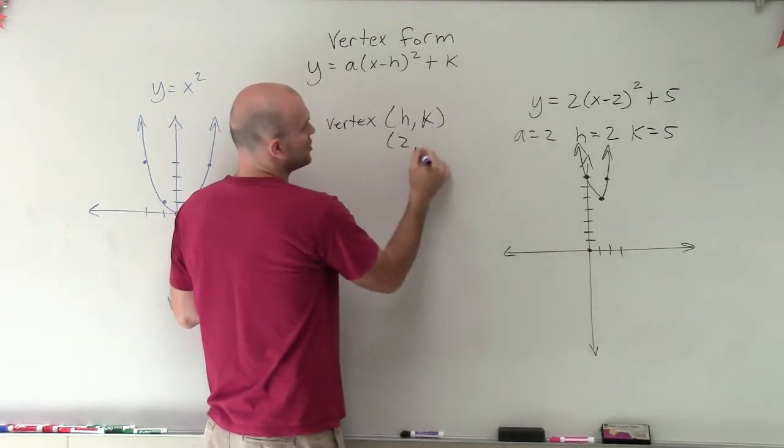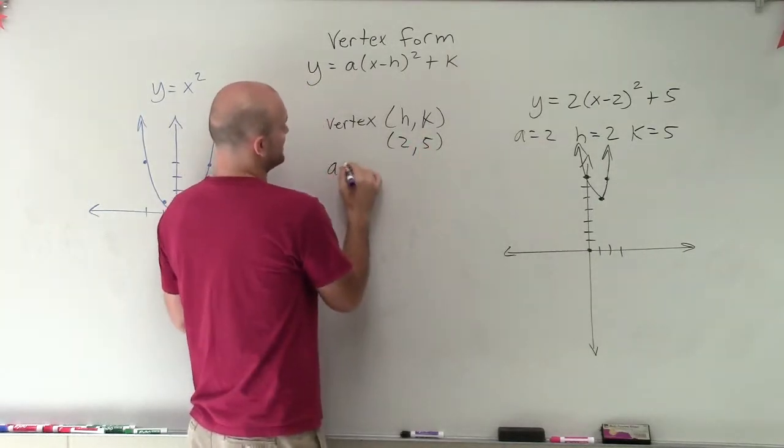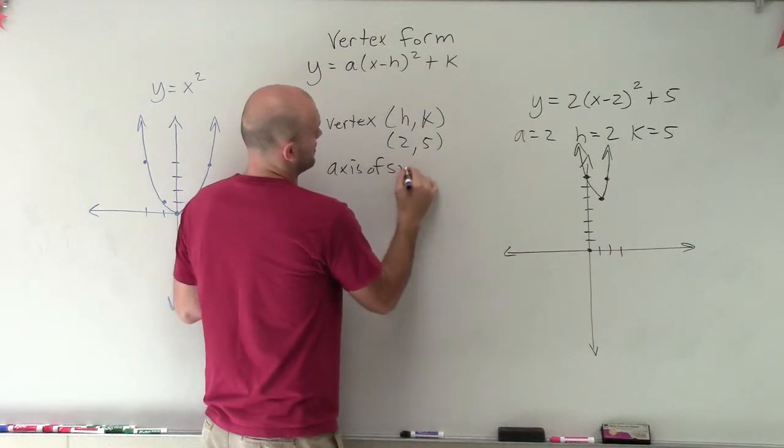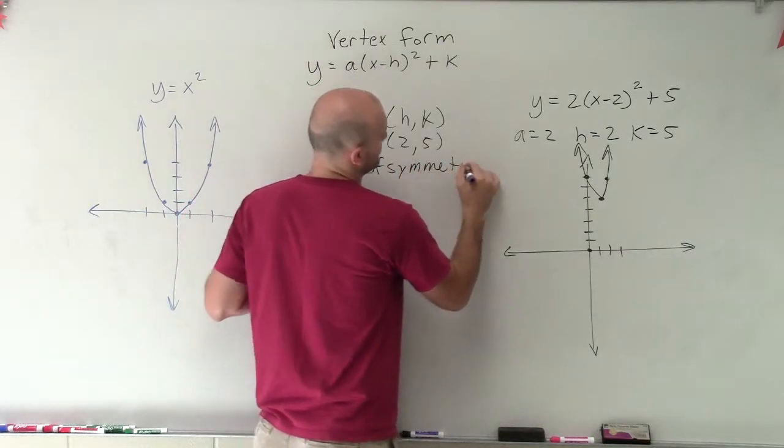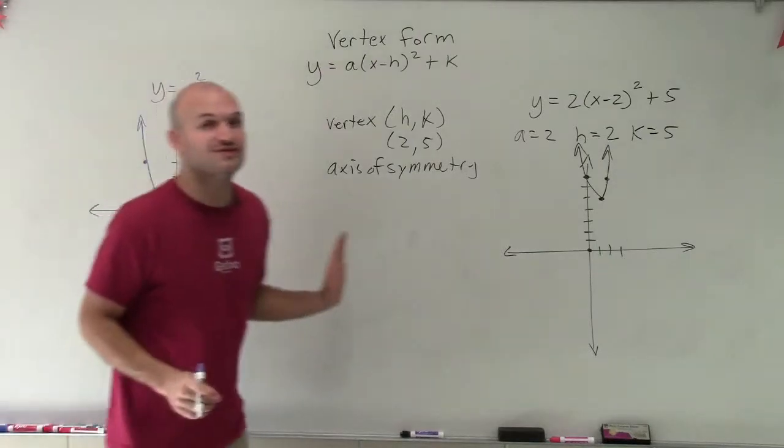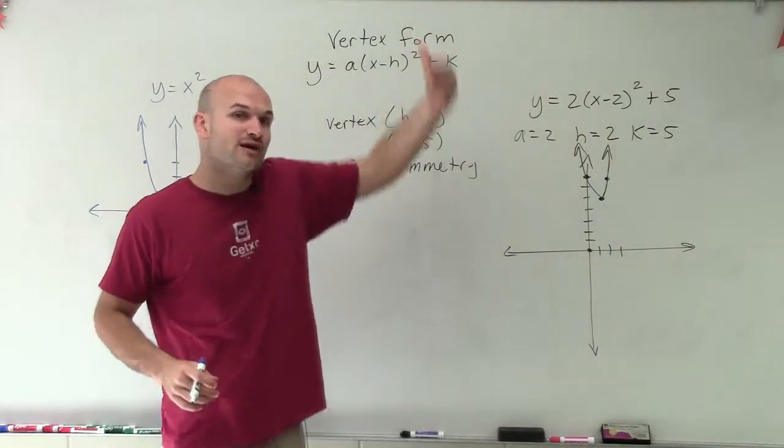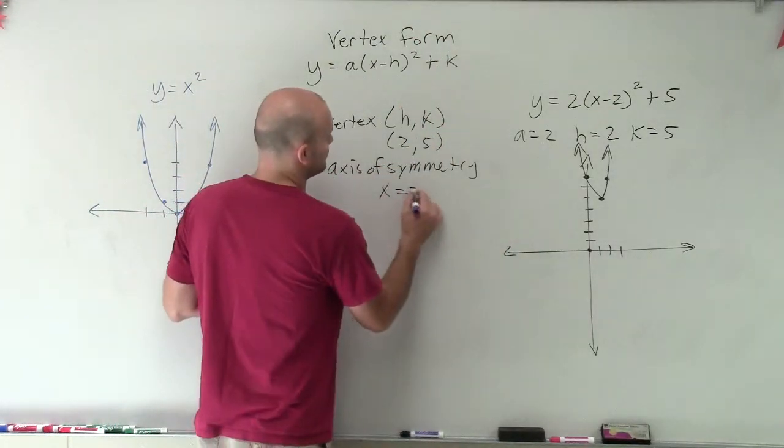So now my vertex is 2 comma 5. My axis of symmetry for the parent graph is x equals 0. Well, since I shifted my graph over 2 units, we have our vertical line is now x equals 2.